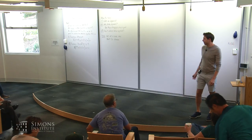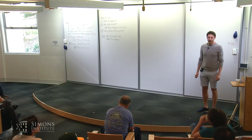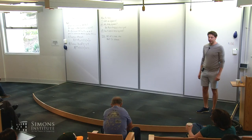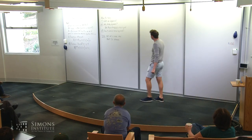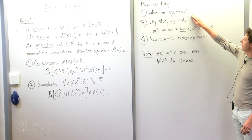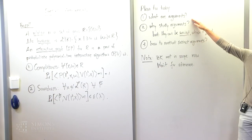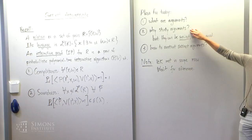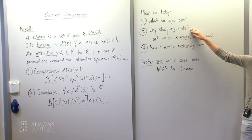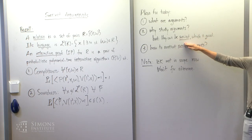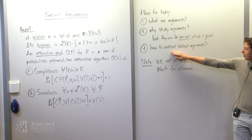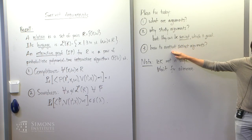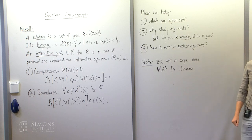Lectures on succinct arguments — I'll explain shortly what they are. In the afternoon we will discuss zero-knowledge proofs. The plan for today is simple: first I have to tell you what arguments are, then I want to motivate why we should study arguments as opposed to proofs. I'll explain the difference in a moment. The reason is that they can be succinct, and that's a good thing. Then I will get into the technical part: how do we construct succinct arguments.